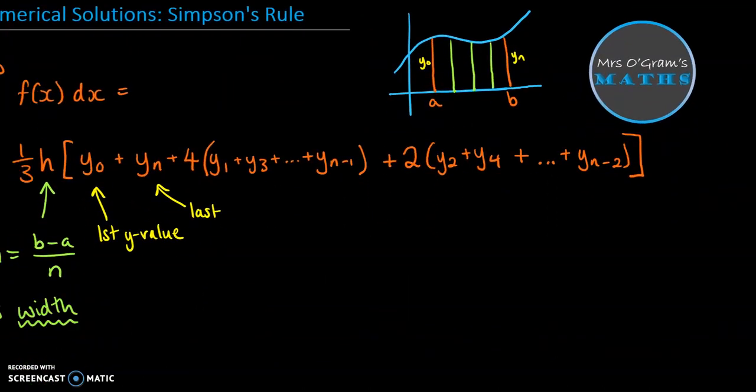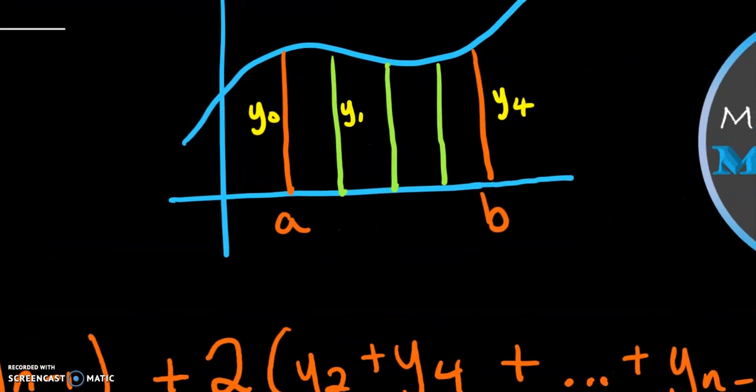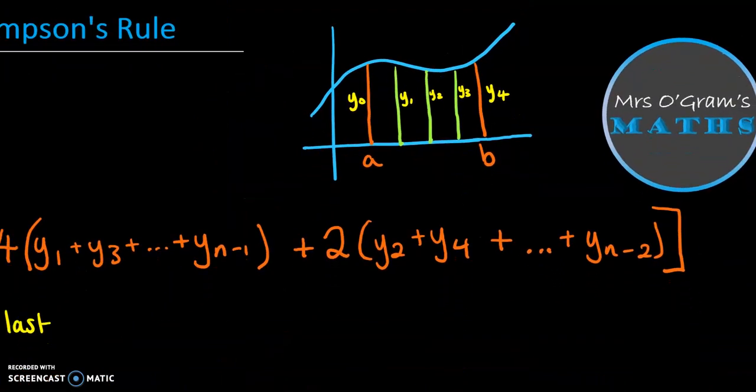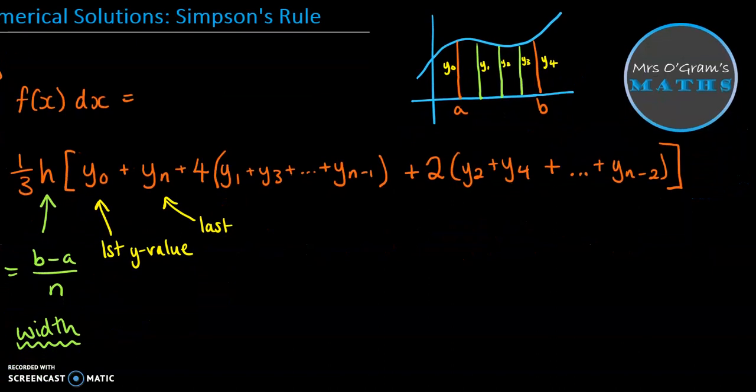Then you have in here all of the odd Y values, and they get multiplied by 4. So in this case, we've got Y zero, Y one, Y two, Y three, Y four. So Y N in this case is our Y four. It's the height of each of the dividing lines for our strips. When we do the odd ones, we add up all of the odd ones. So this takes us from the first odd to the last odd, add them up and times it by four.